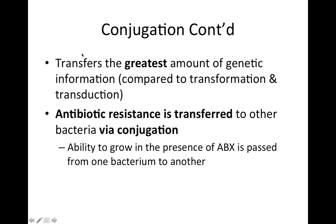Conjugation transfers the greatest amount of genetic information compared to transformation and transduction. Additionally, antibiotic resistance is transferred to other bacteria through this method — so the ability to grow in the presence of antibiotics is passed from one bacteria to another through conjugation.